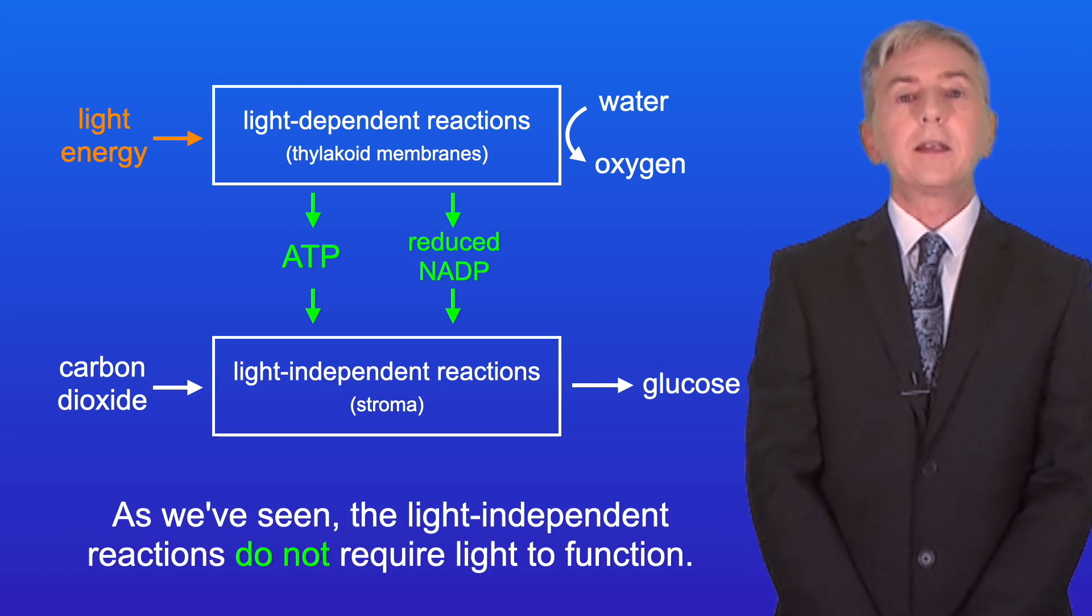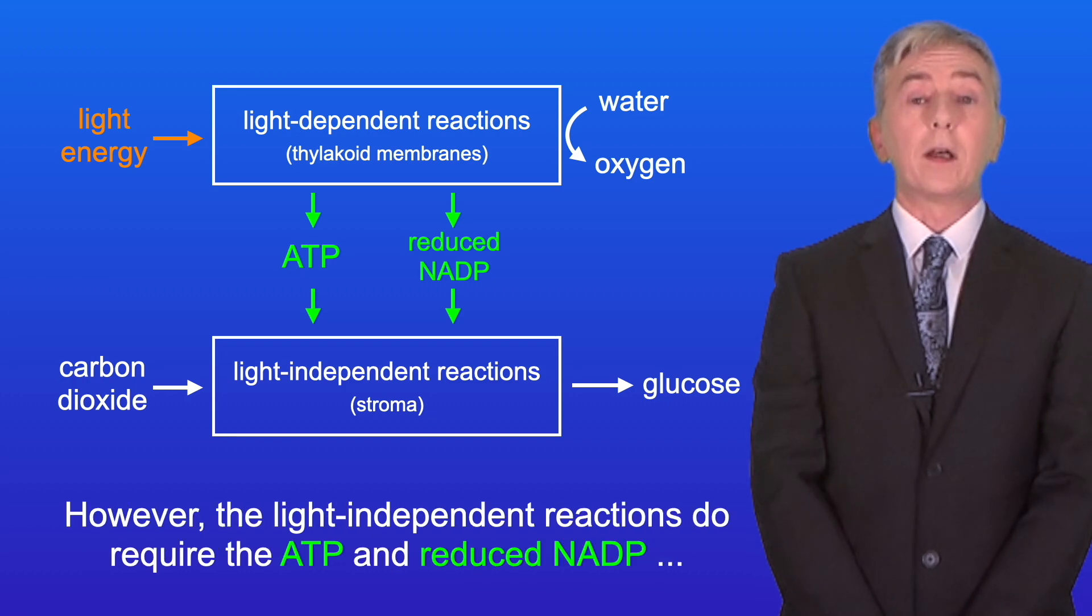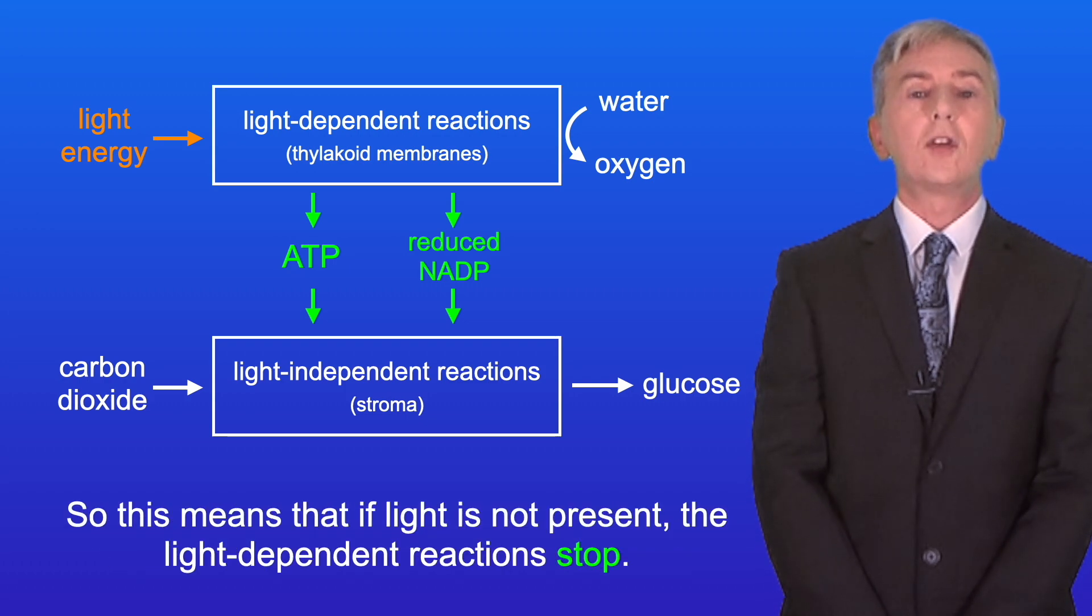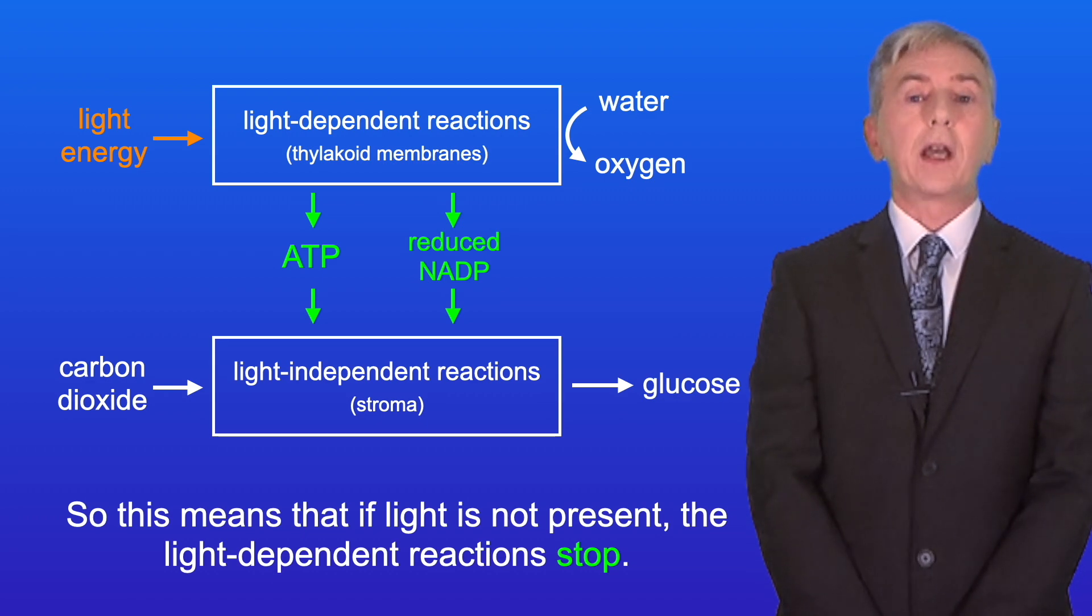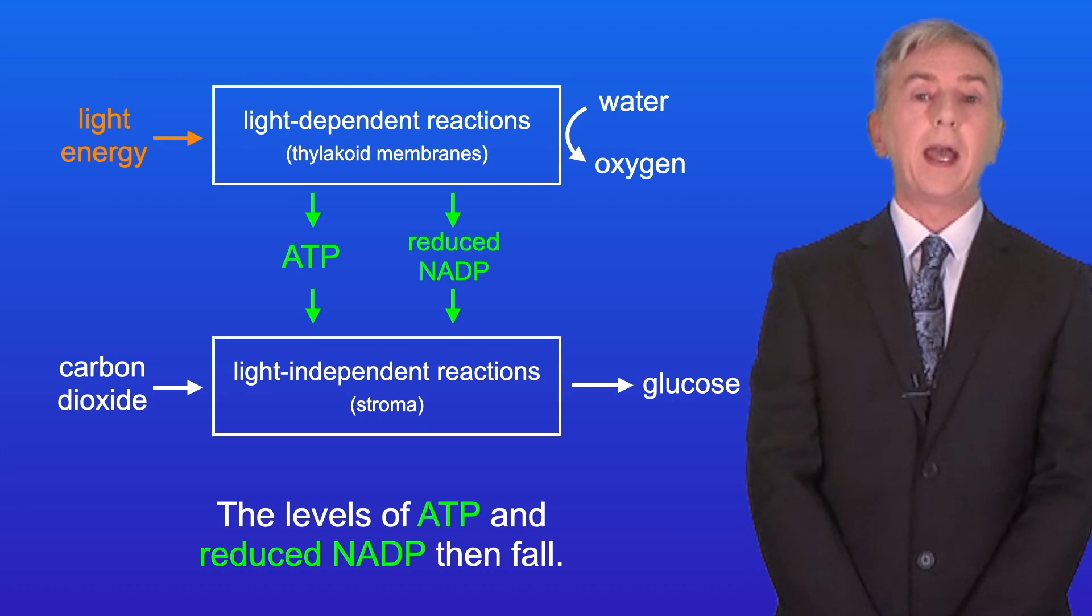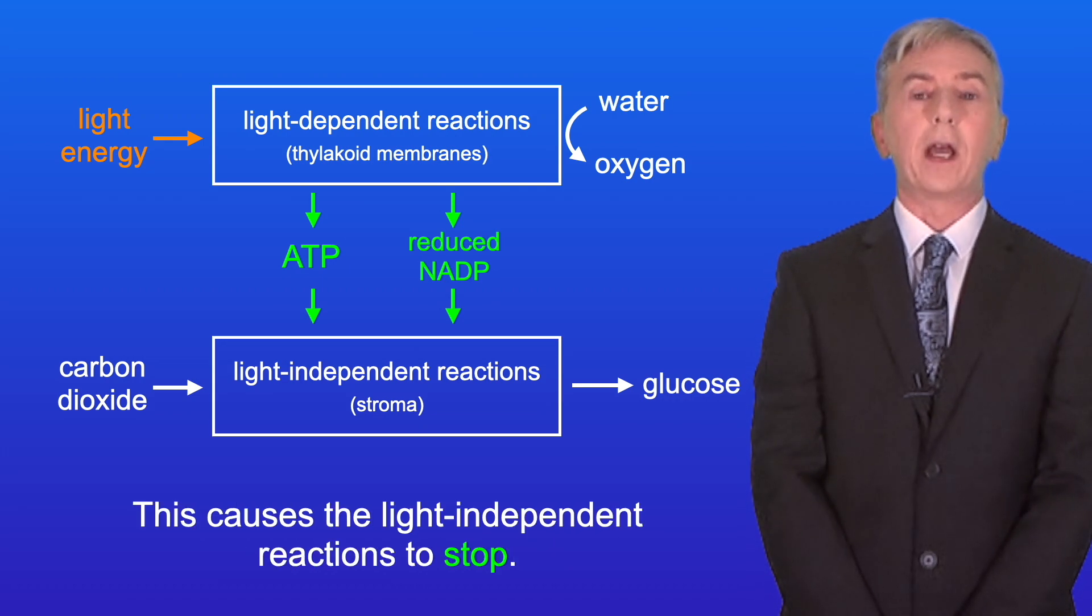So as we've seen, the light-independent reactions do not require light to function. However, the light-independent reactions do require the ATP and reduced NADP produced by the light-dependent reactions. So this means that if light is not present, the light-dependent reactions stop. The levels of ATP and reduced NADP then fall, and this causes the light-independent reactions to stop.